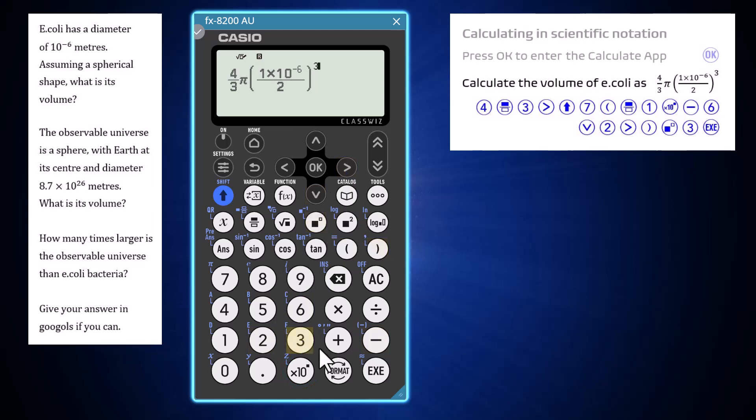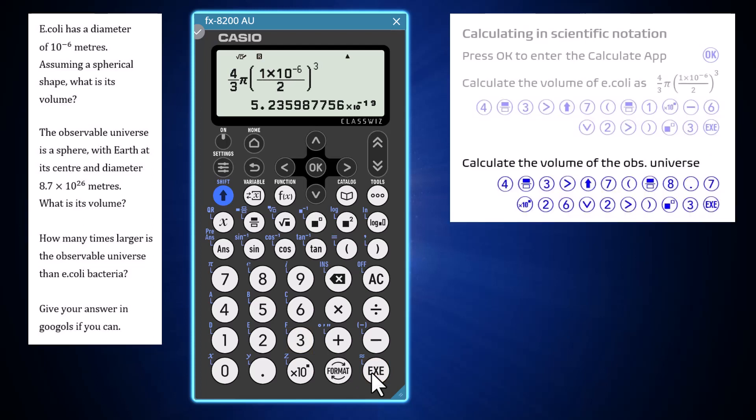With this done, the output is given in scientific notation because the number is so small. A very similar command can be entered to find the volume of the observable universe. I will enter the command again, this time entering the diameter as 8.7 by 10 to the power of 26.